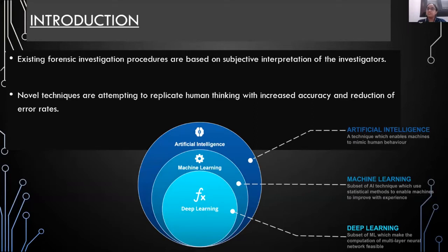Before we move further, it is important to understand these three terms. Artificial intelligence refers to techniques that enable machines to mimic human behavior. Machine learning is a subset of artificial intelligence that uses statistical methods to enable machines to improve with experience — it is a simpler learning technique. Deep learning refers to computation of multi-layered neural networks in which machines learn by themselves from experience and improve their error rates as their performance increases.